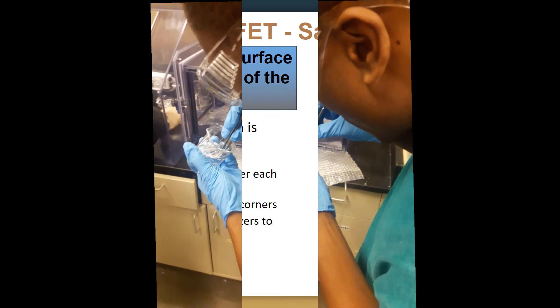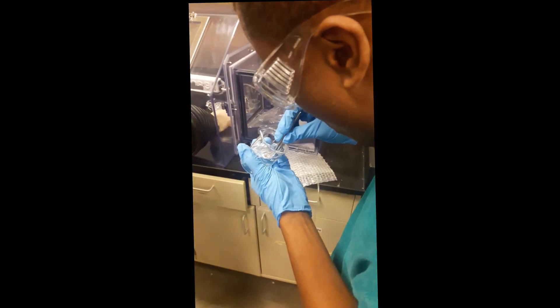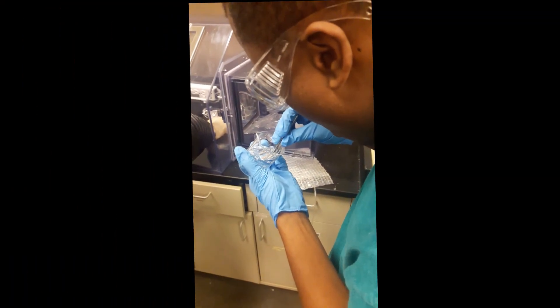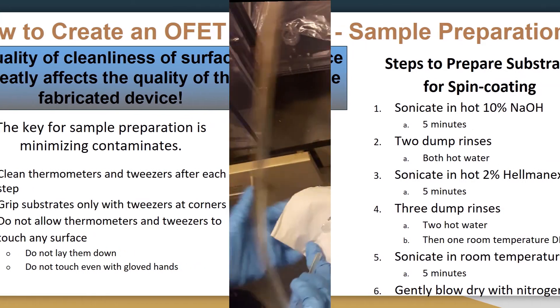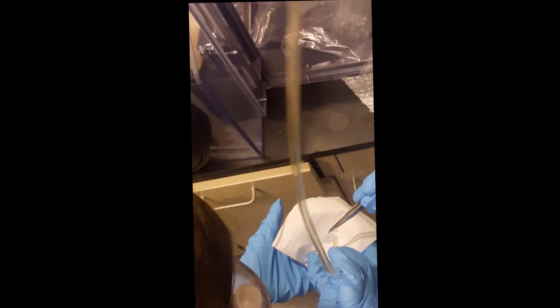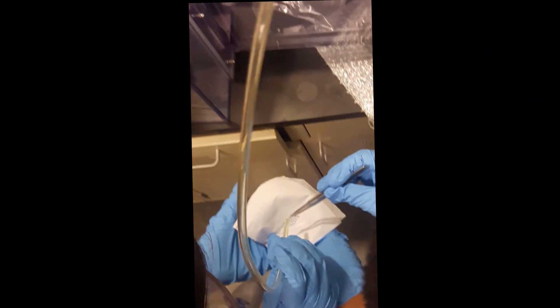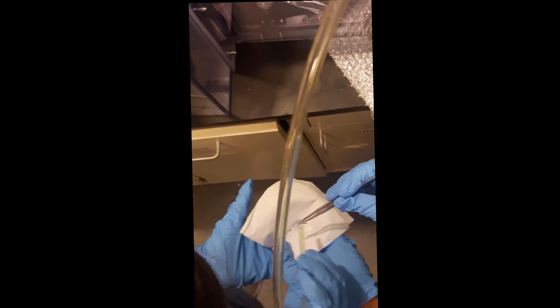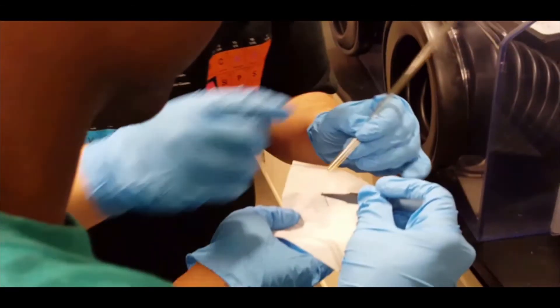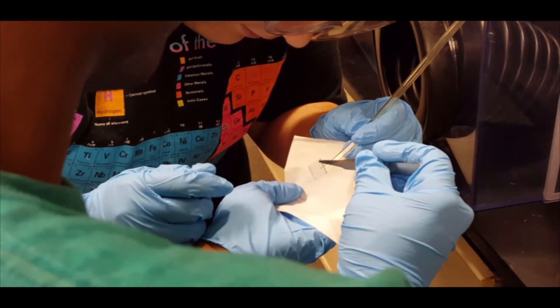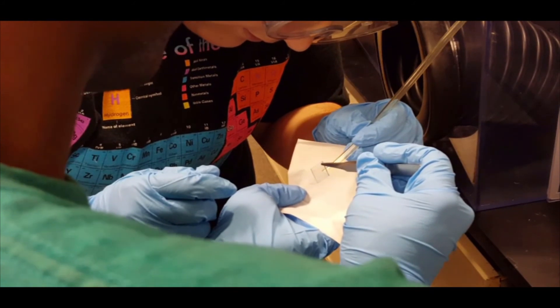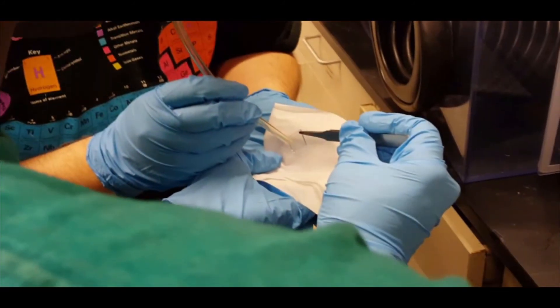Step 5: Sonicate in room temperature IPA for 5 minutes. Lastly, blow dry the sample using dry nitrogen. It is important to handle the substrate with tweezers at all times and hold it by the corners to avoid scratching or contaminating the main body of the substrate.